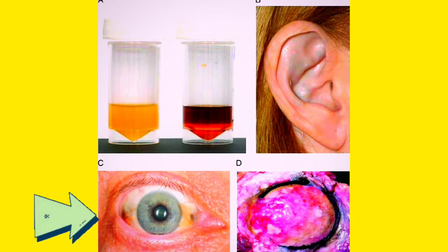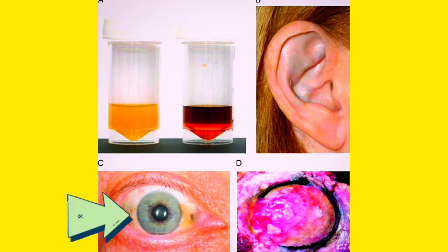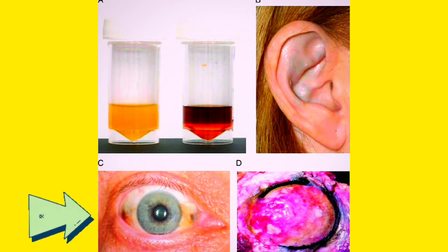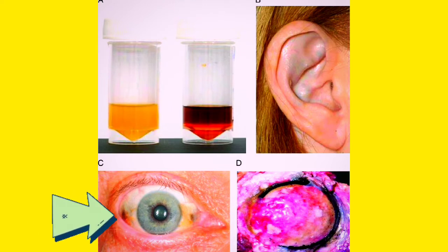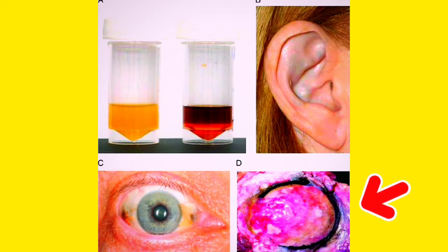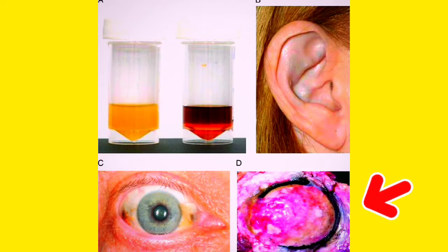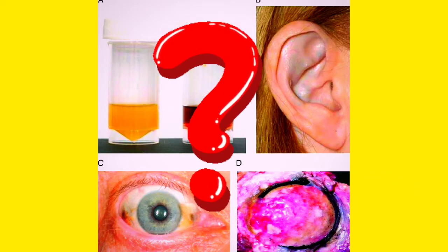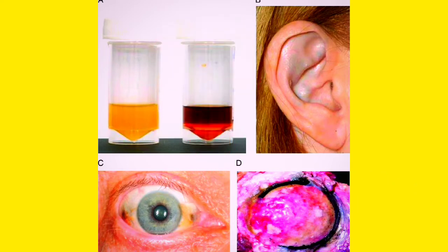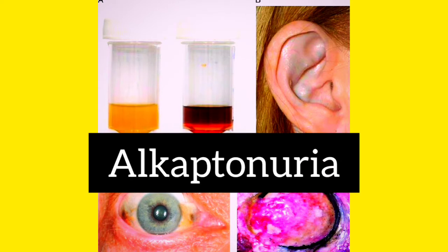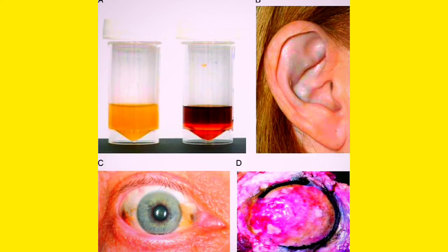If you look at the third picture, that is of the eye — you can see black spots on the sides of the cornea. And number four shows blackish coloration and arthritic joint changes. So which disease is this? This disease is actually alkaptonuria, where the urine sample turns black.